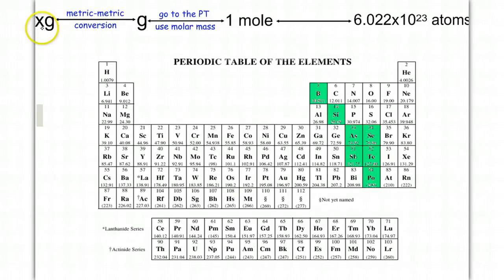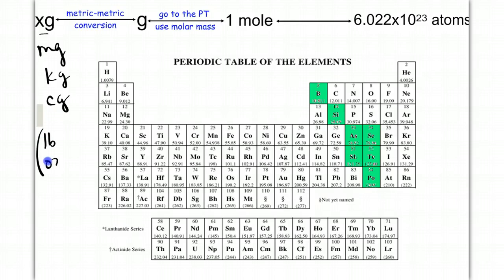In our map, notice all the way on the left-hand side we have what's called x-gram — things like milligram, kilogram, centigram, or in the English system, pounds and ounces. Your goal, if you have any of these, is to convert to grams first. From grams, we go to the periodic table, use the mass, and convert to moles. Then from moles, using Avogadro's number, we can convert to number of atoms.